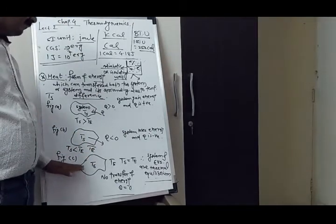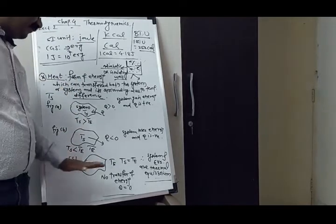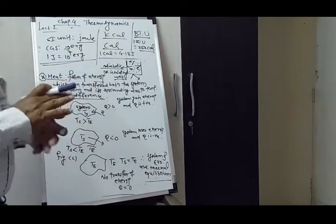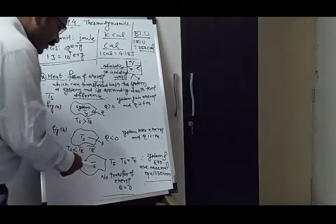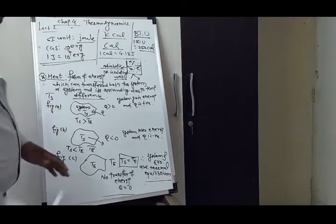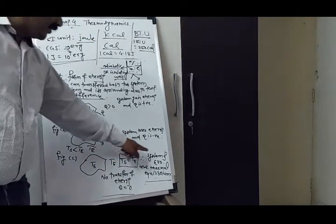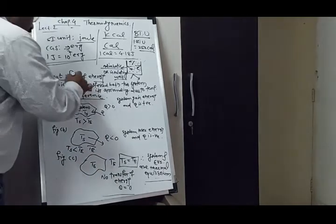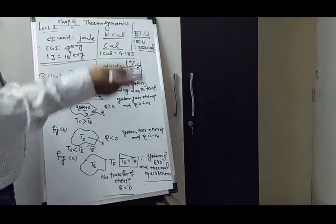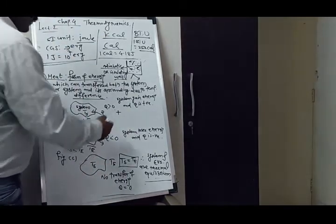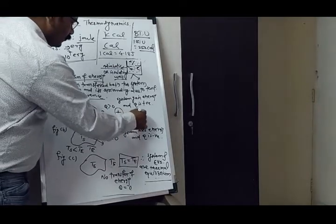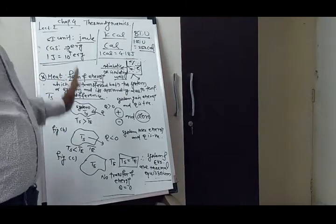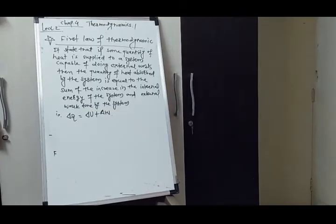In figure C, there is no transfer of heat between the system and surrounding. This relates to the zeroth law of thermodynamics — both are in thermal equilibrium. When temperature of the system equals temperature of the surrounding, both are in thermal equilibrium, no energy is transferred, so Q equals zero. Therefore heat may be positive, negative, or zero.